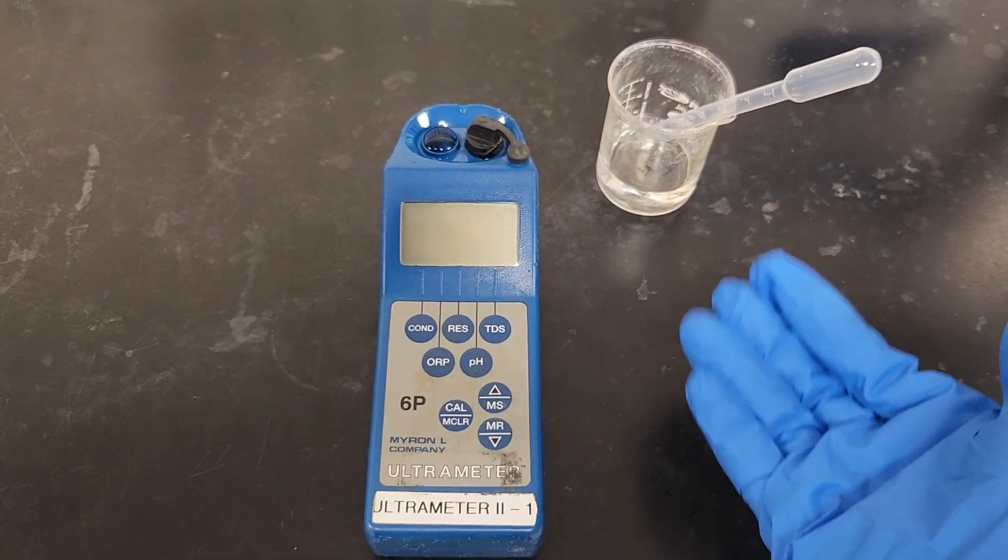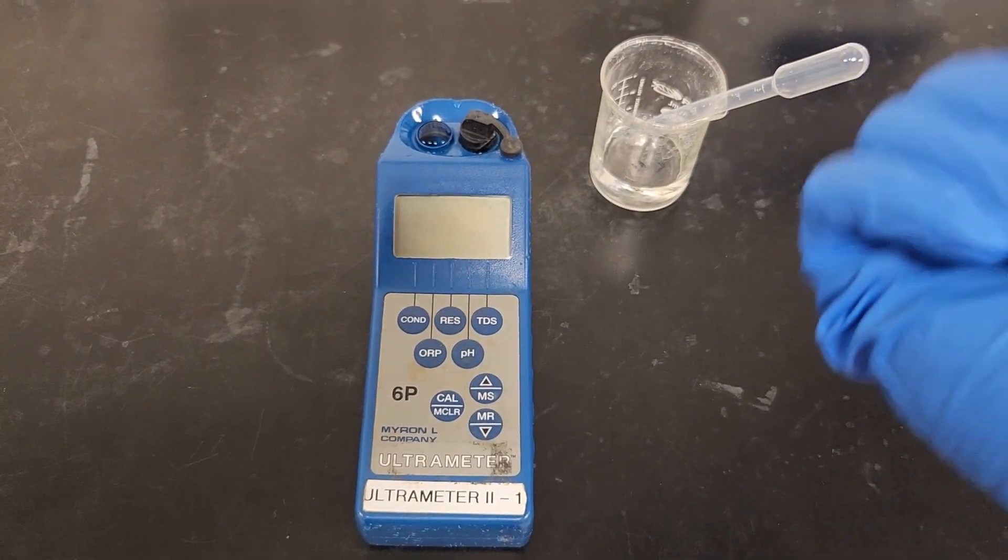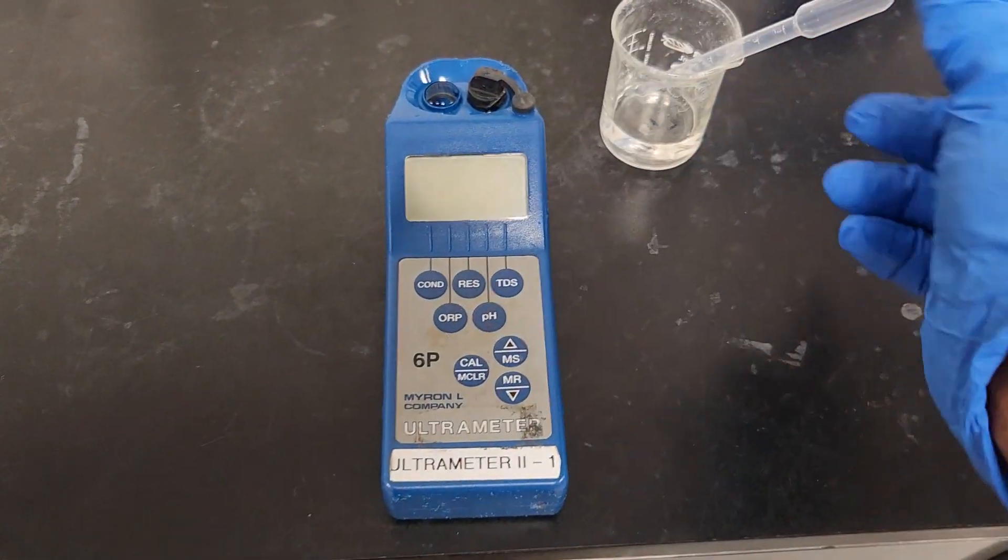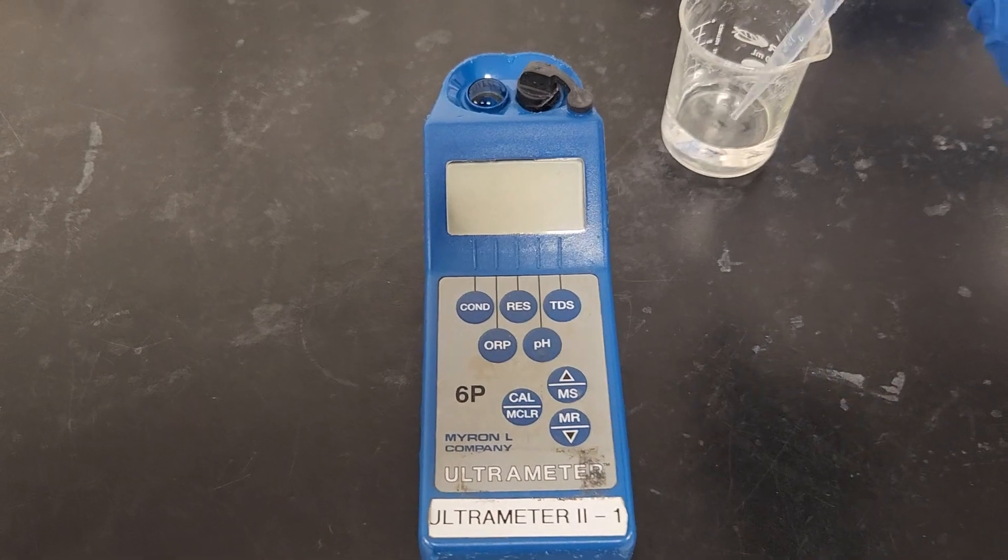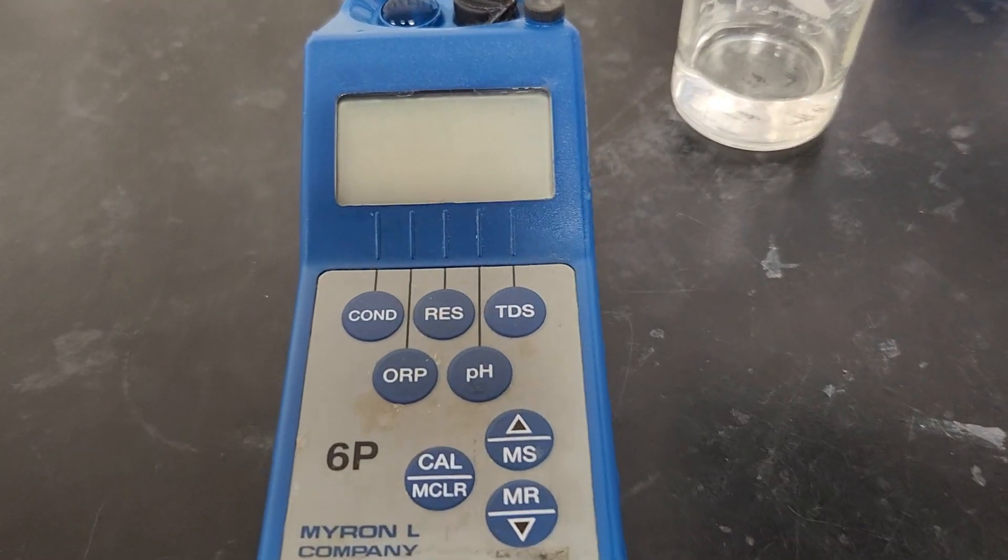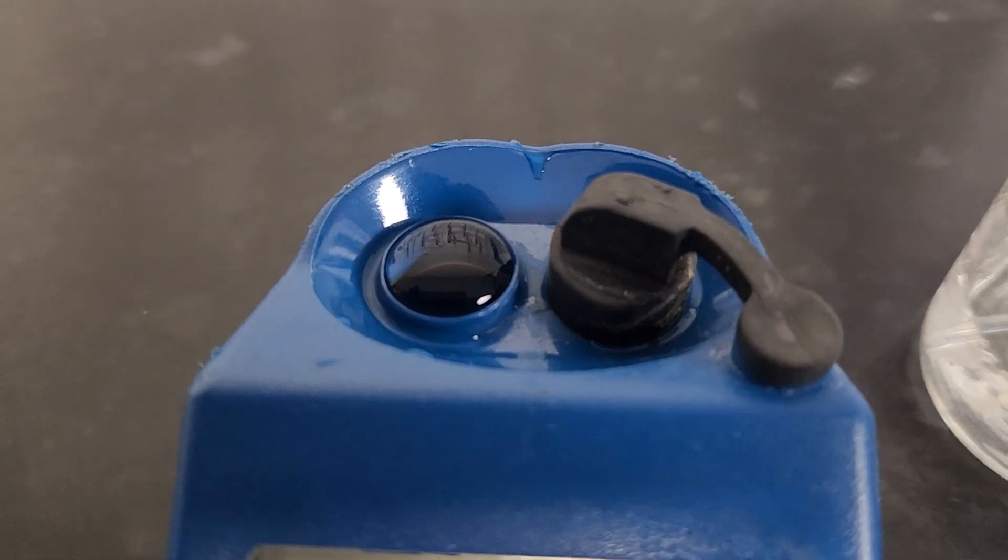So now I already have the sample inside ready. I just use the pipette and try to make sure there is no air bubble in the water that you're measuring, in the sample you're measuring.